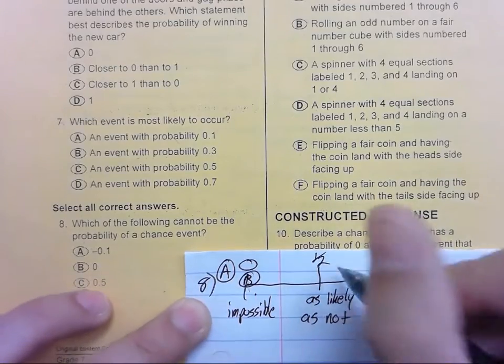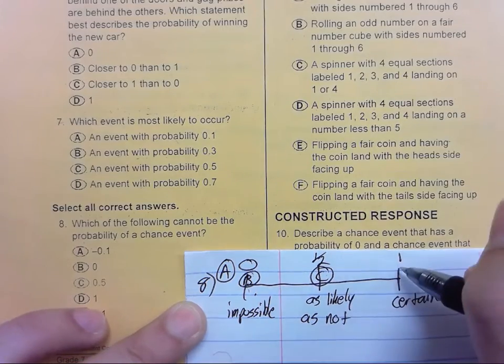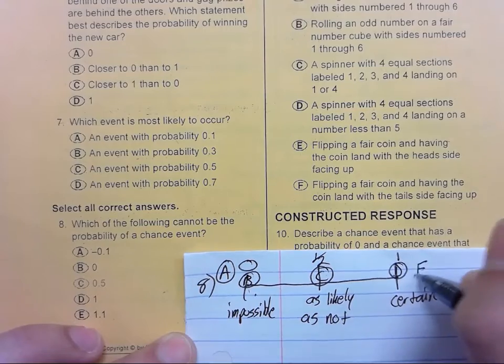C would be 0.5. This would be C. D would be 1. So D would go here. And E would be 1.1. E would go over here.